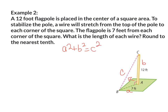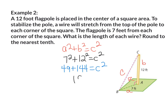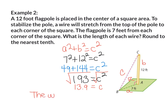Plugging in the numbers: 7 squared plus 12 squared equals C squared. 7 squared is 49, and 12 squared is 144. 49 plus 144 is 193, so 193 equals C squared. Taking the square root of both sides, the square root of C squared is just C, and the square root of 193 is approximately 13.9. That means the wire is 13.9 feet.